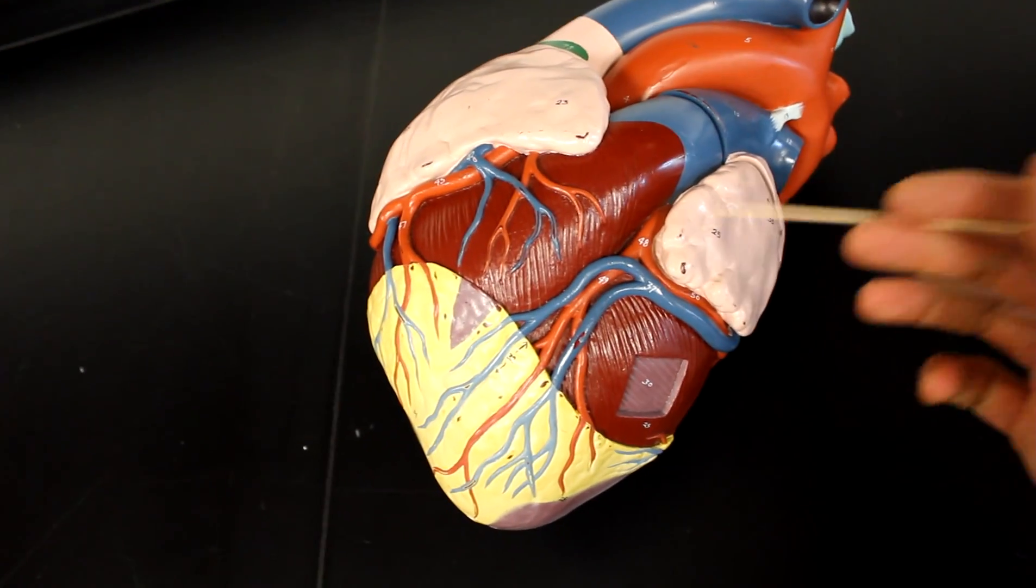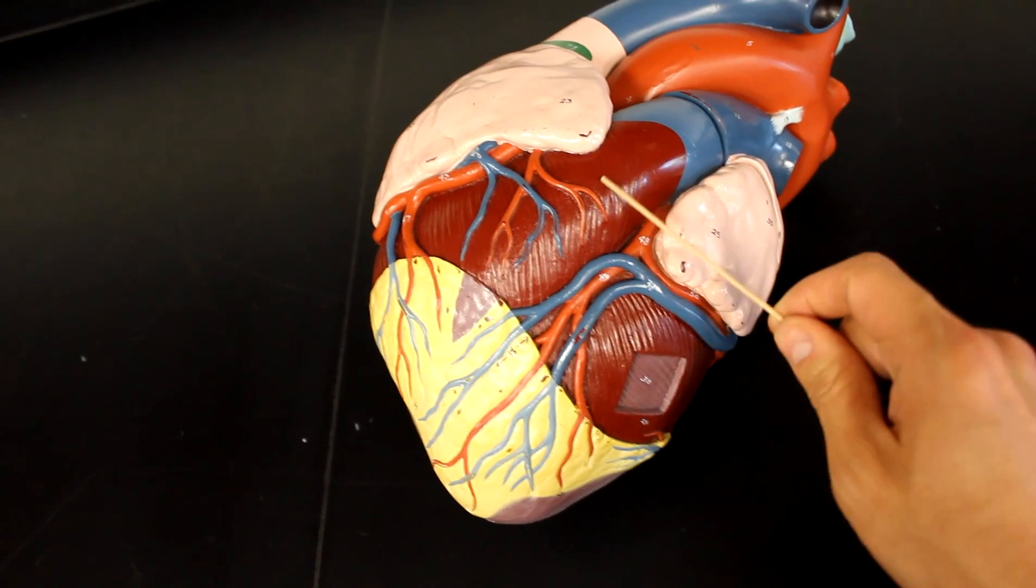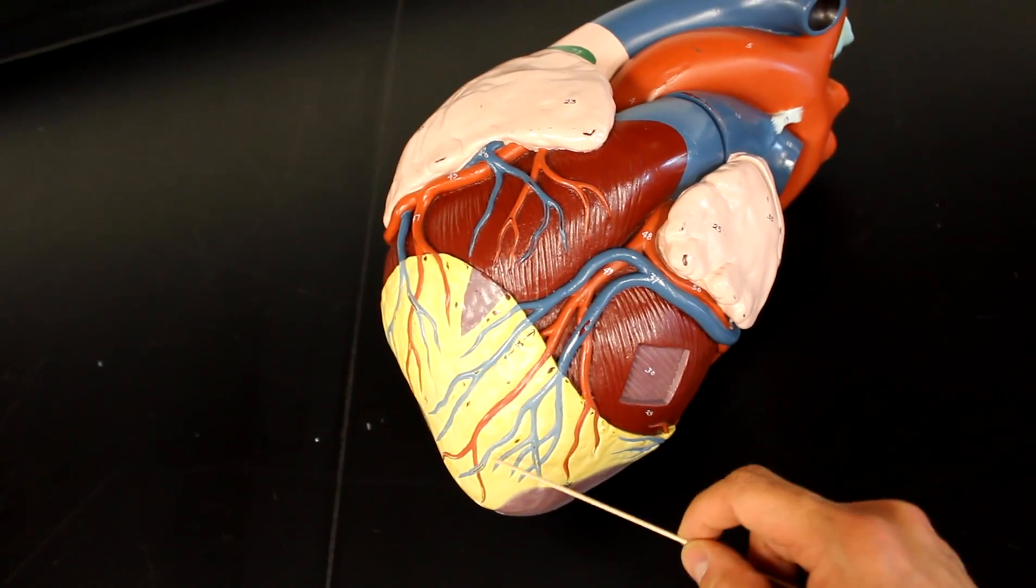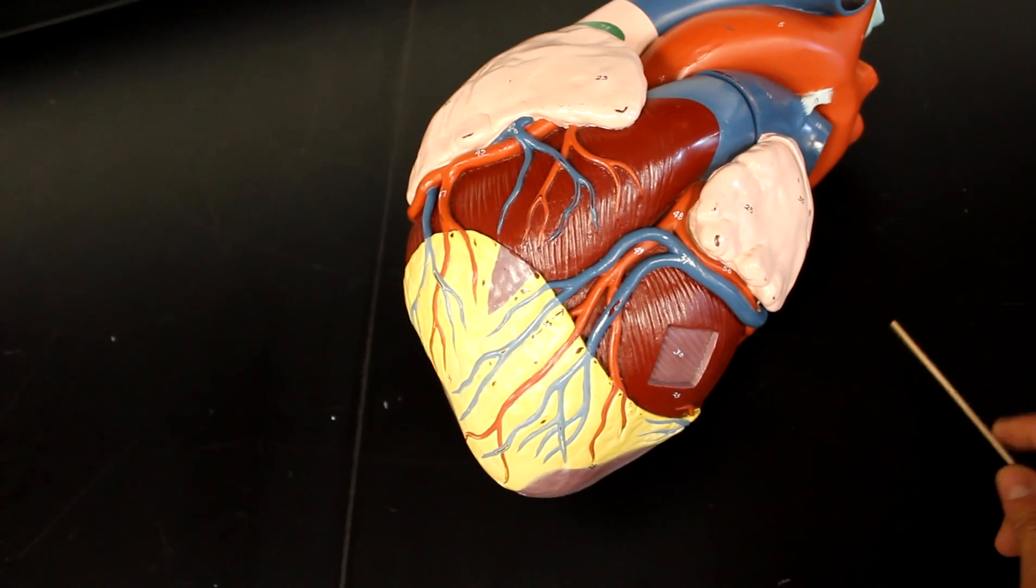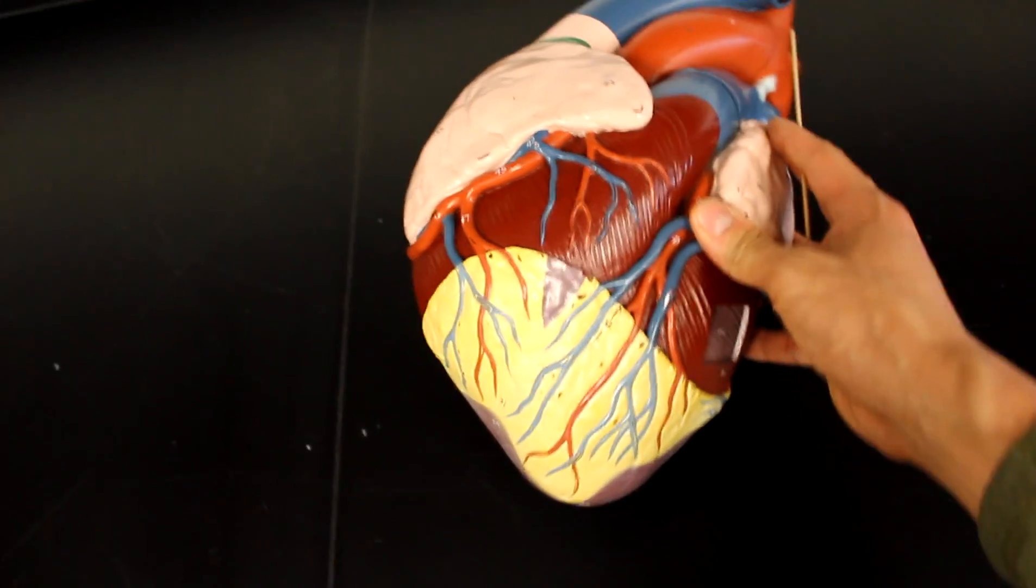We name these when they continue to branch, and I know there's many other names for some of these. Like the anterior interventricular branch is also known as the left anterior descending or LAD, and people use acronyms all the time for this.